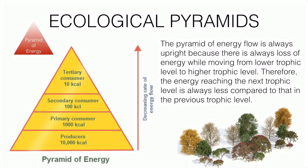The pyramid of energy is always upright and never inverted because there is always a loss of energy when moving from a lower trophic level to a higher one. Therefore, the energy reaching the next level is always less compared to the previous trophic level.